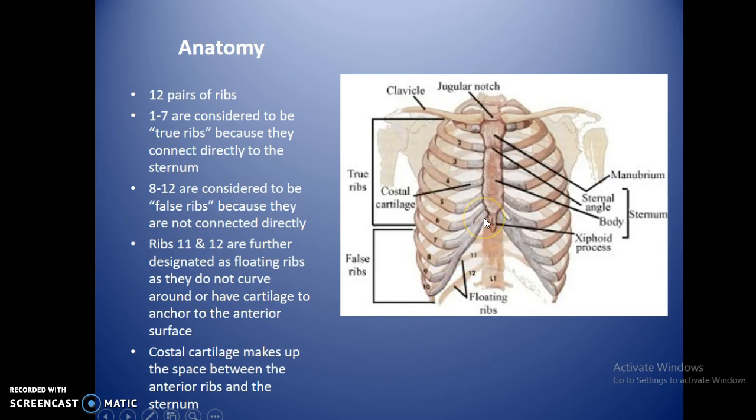Ribs 11 and 12 are further designated as floating ribs because they do not curve around or have much cartilage toward the end. Those two little ribs just hang out toward the outside — they go posteriorly but will not arc around.